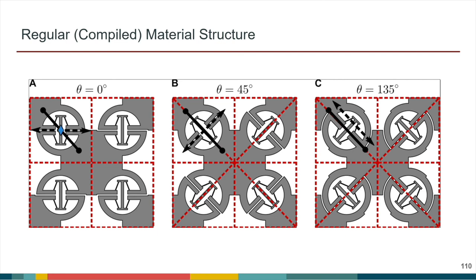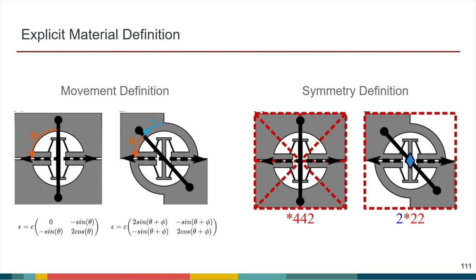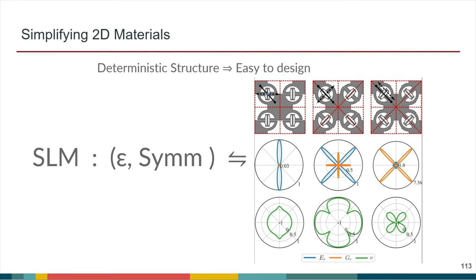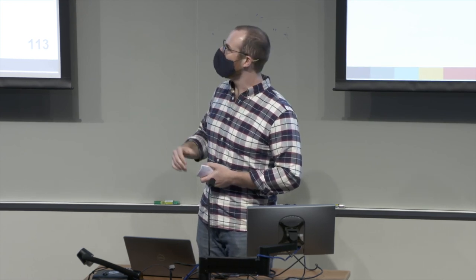Moving from a stochastic structure into a regular or compiled material structure, we have these kinds of repeated tiling cells. These are cells that are allowed to traverse along the dashed lines, and only the dashed lines. By repeating these tilings, we define the movement. We have the movement definition as well as the symmetry definition — think of this as a static structure that we define up front. Then we take all of these symmetries and mathematics, and we can compile it to give us a structure that varies as we sweep theta, as we rotate the arrow around the space.